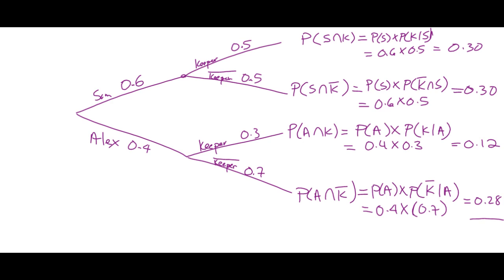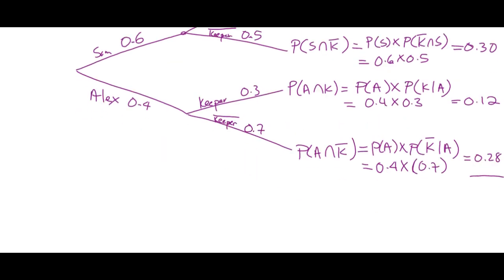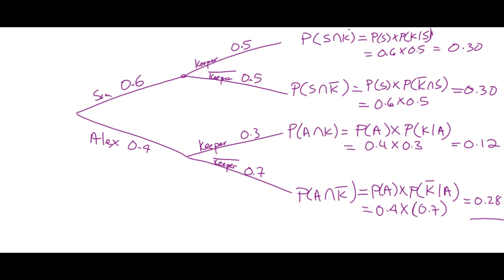What must all four final probabilities add up to? One. So we have 0.30, 0.30, 0.12, and 0.28 — they sum to 1.00. If they don't add up to one, you haven't accounted for everything or made a mistake. Now, what's the probability that you are the keeper? You're the keeper in two scenarios: Sam is coach and you're keeper (0.30), or Alex is coach and you're keeper (0.12). So 0.30 + 0.12 = 0.42.